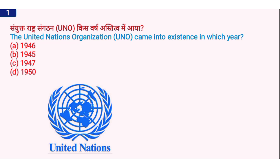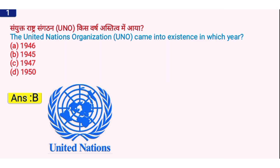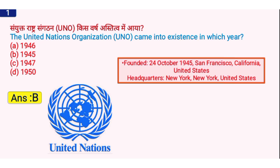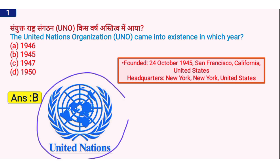The first question is: the United Nations Organization came into existence in which year? The right answer is option B, 1945. The exact date is 24 October 1945. It was formed in San Francisco, California, in the United States. Its headquarters is also located in New York, United States.